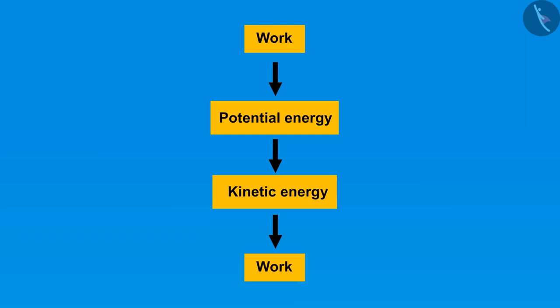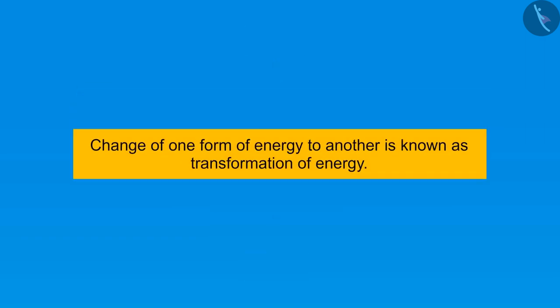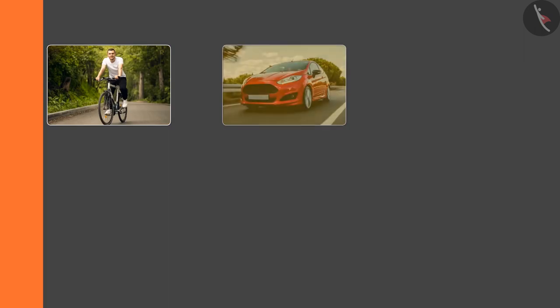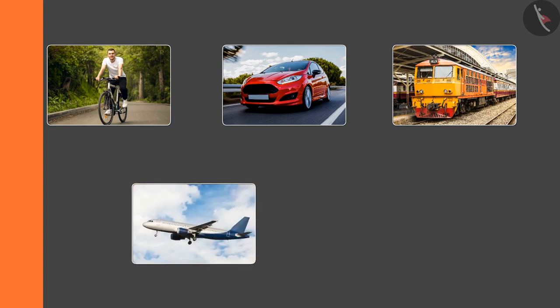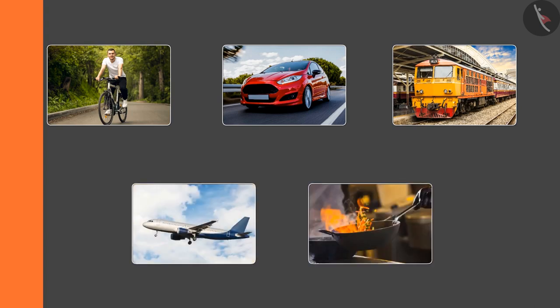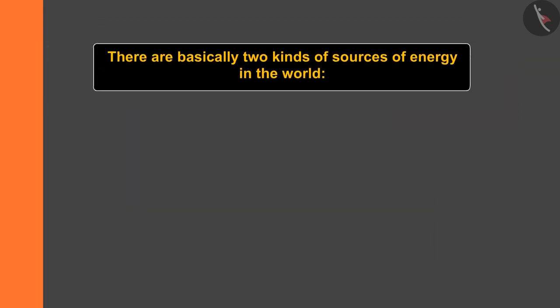Let's understand the whole cycle again. Firstly, work is converted into potential energy. Secondly, potential energy is converted into kinetic energy. Thirdly, kinetic energy is converted into work again. This rule is followed by everyone and everything in this world. The change of one form of energy to another is known as transformation of energy. From a moving bicycle to a moving car, from a moving train to a flying aircraft, from cooking food to the energy taken from food — each and everything is an example of transformation of energy.